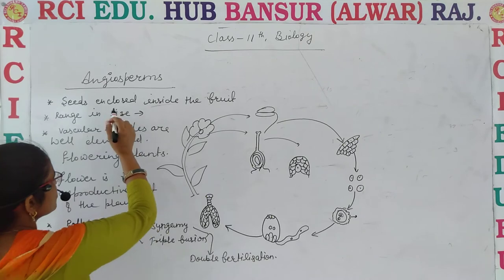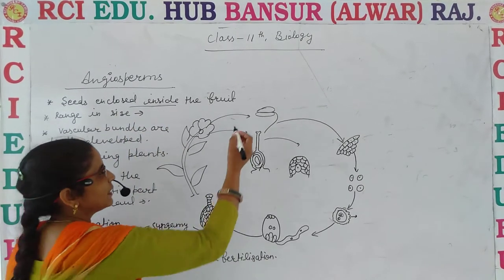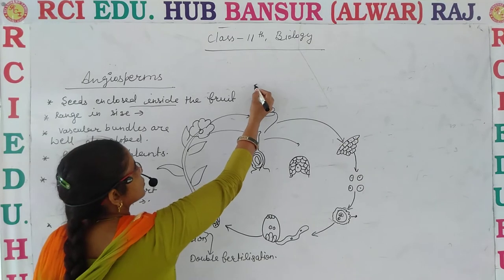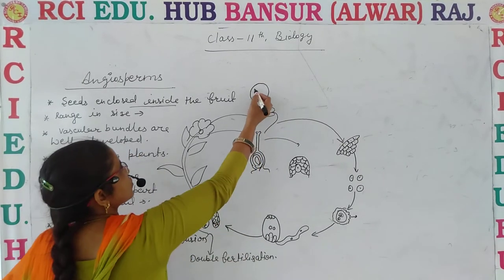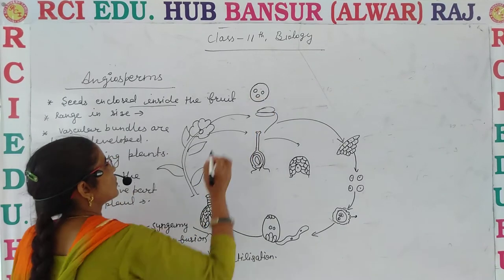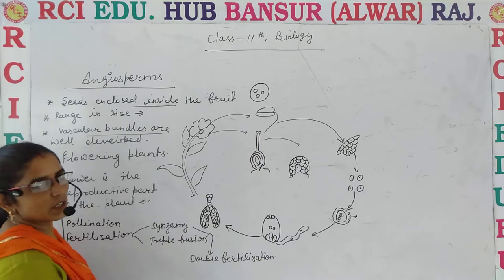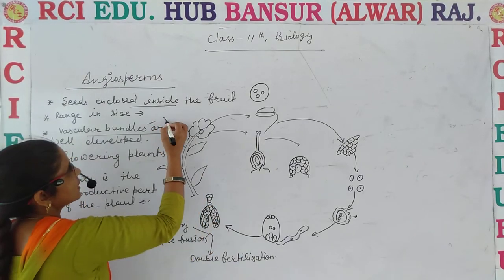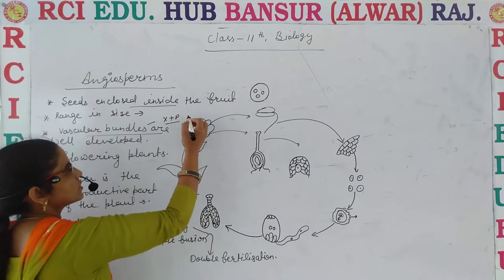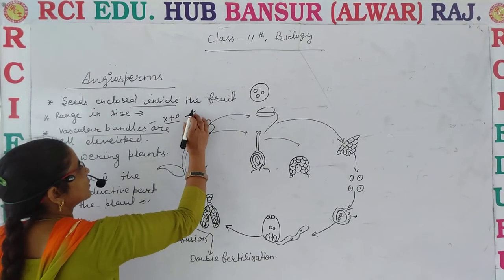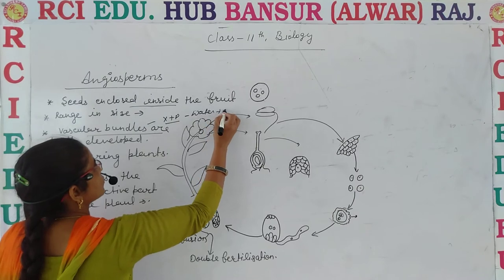Angiosperms are the plants which have seeds enclosed inside the fruit. It means the seeds are enclosed inside the fruit wall or inside the ovary. This is the first feature of the angiosperms. Second, they have well-developed vascular bundles — xylem and phloem — which are helpful in transportation of food and water.